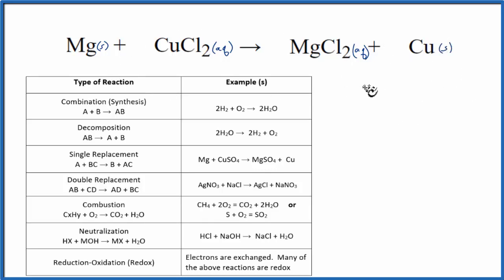So this is our reaction here. When we look at it, we can see that magnesium—we start out with this single element—and we end up with a different single element, copper. So we're thinking this is probably going to be a single replacement reaction, also called a single displacement reaction. Think of it this way: